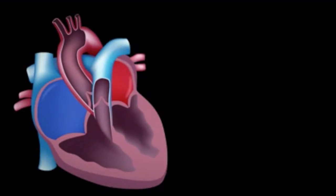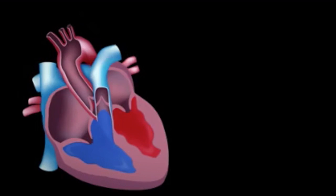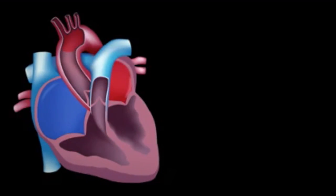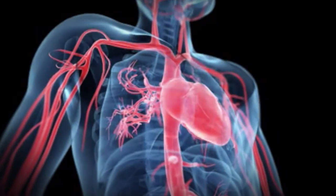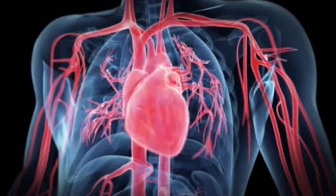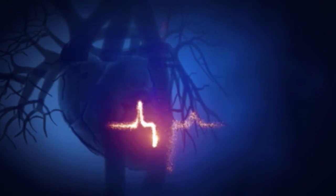Oxygenated blood leaves the lungs, travels to the left atrium, then on to the left ventricles which pumps it to the systemic circulation to provide oxygen and nutrient rich blood to the different organs and tissues. The heart pumps blood to the lungs and all the body's different organs and tissues by a sequence of highly organized contractions of the four chambers.